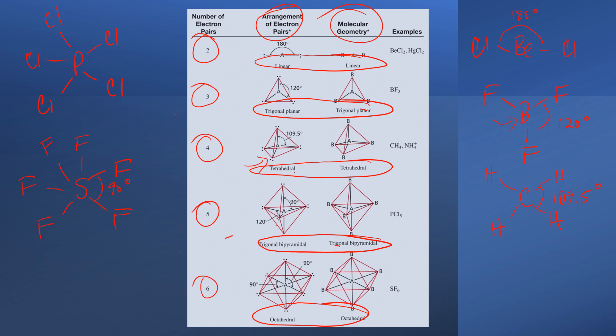Going back to PCL5, notice we have a combination in trigonal bipyramidal. We have a combination of 90 degree angles and 120 degree angles. So, for these structures that don't have any lone pairs, ranging from two to five atoms surrounding the central atom, you must know by heart, hold these geometries.